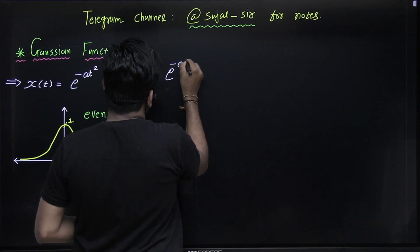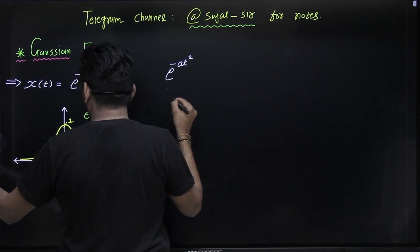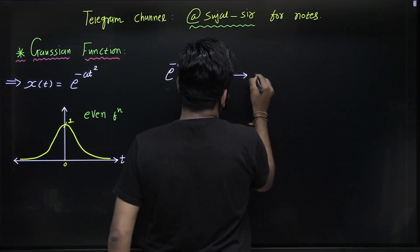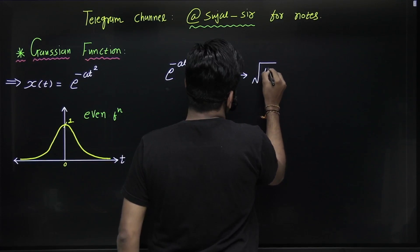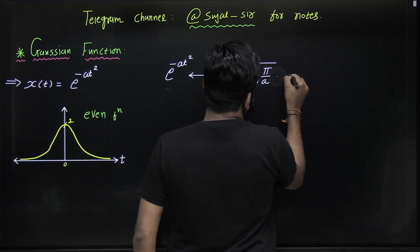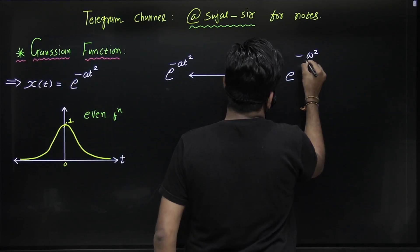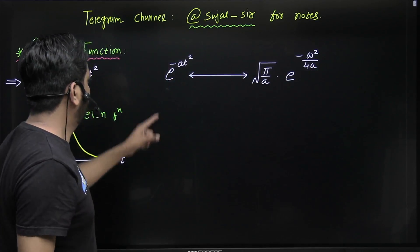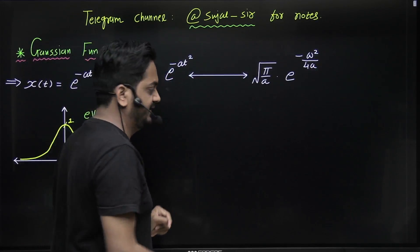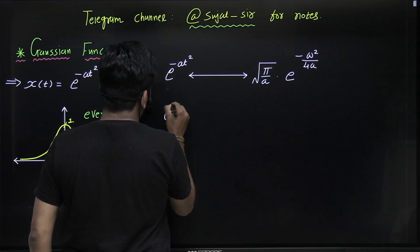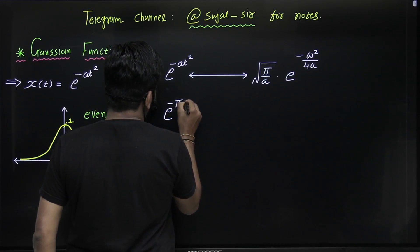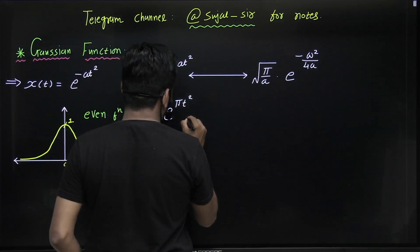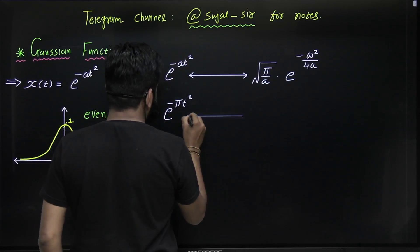Next, what is the Fourier transform of the Gaussian function? The Fourier transform of e^(-at²) is given by √(π/a) · e^(-ω²/4a). If you take a = π, then e^(-at²) becomes e^(-πt²), and its Fourier transform is computed by substituting a = π.